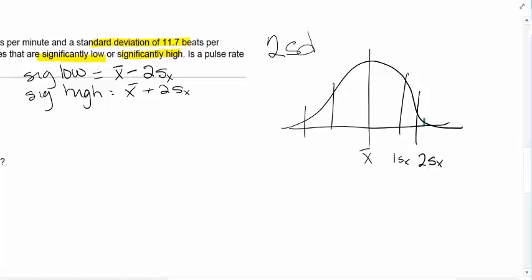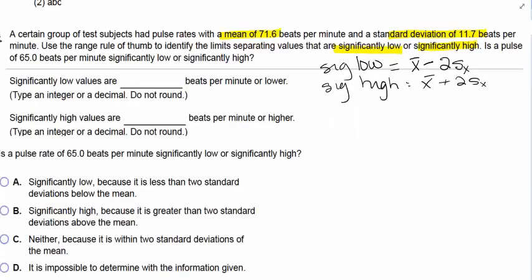And then we notice this little spot right here is very, very small on the standard normal curve because those values out there are two standard deviations away. So we have the mean equals 71.6 and the standard deviation is 11.7.